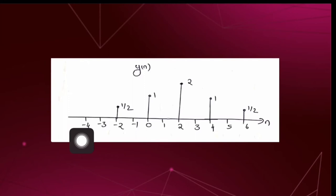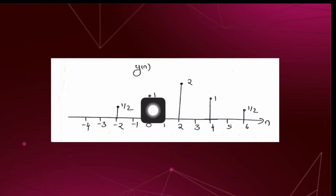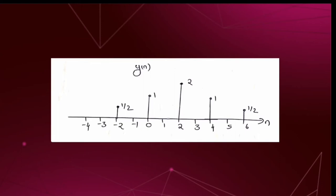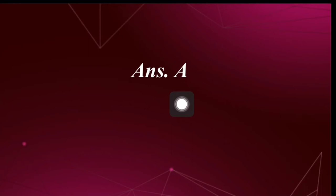Based on that, we plot y[n]. The independent variable n is plotted along the x-axis and the signal value along the y-axis. At n = −2, y[n] = 1/2; at n = 0, it is 1; at n = 2, it is 2; at n = 4, it is 1; and at n = 6, it is 1/2. By comparing the options given, we get the answer as option A. Let me now take you to the next question.